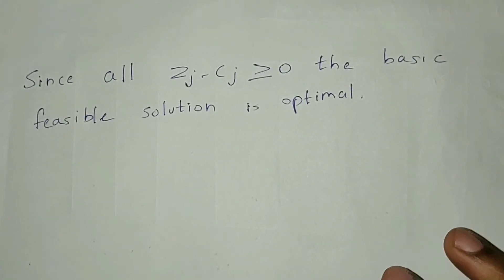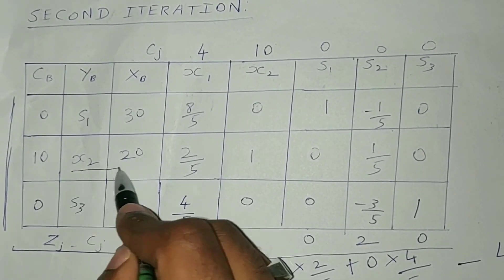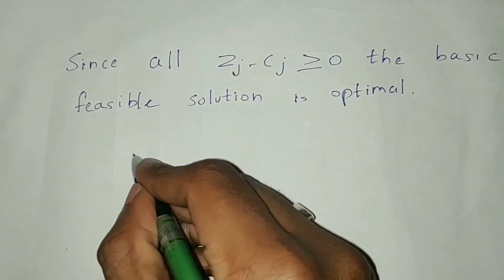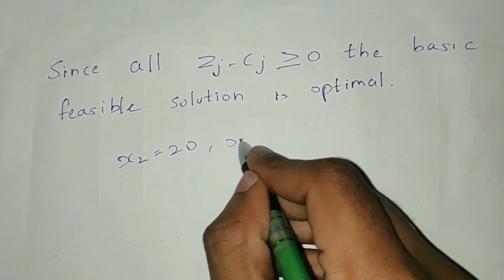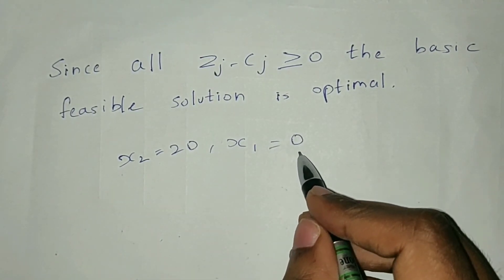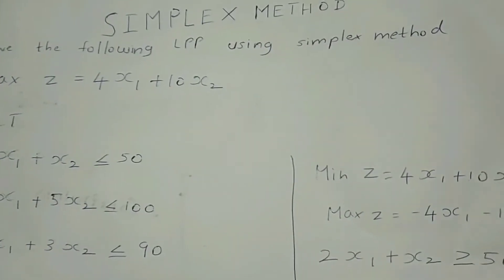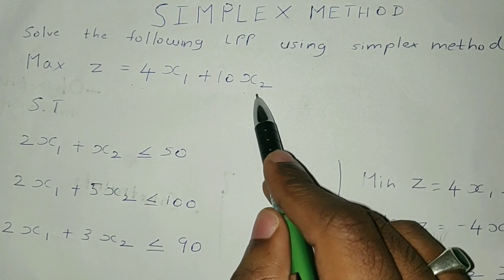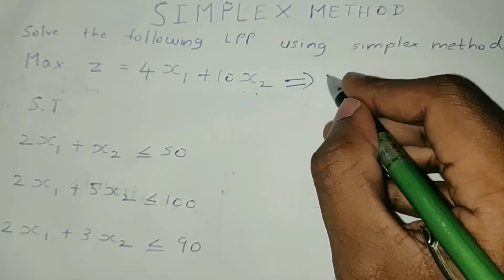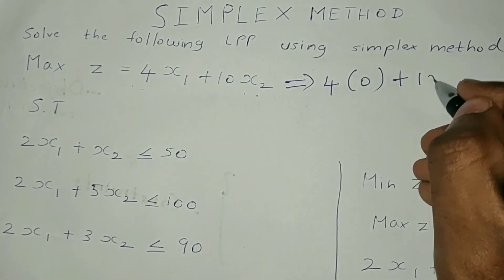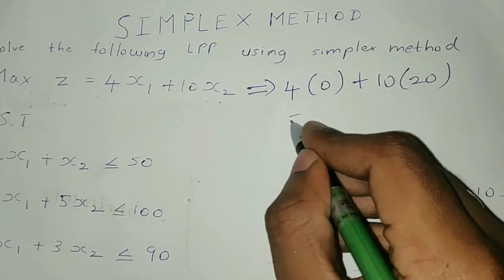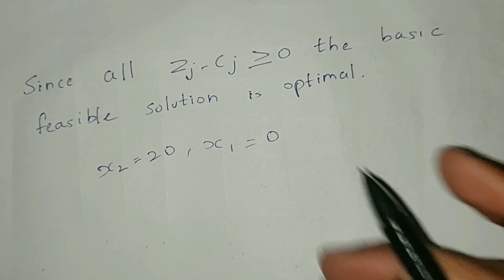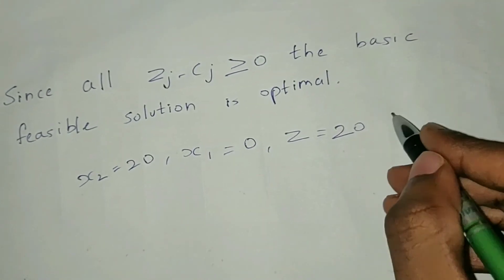We got the value of x2 as 20, and since no value was obtained for x1, we take x1 equal to 0. Substituting into the objective function: z equals 4×0 plus 10×20 equals 200. So the optimal solution is z equal to 200. This is the final solution for this problem.